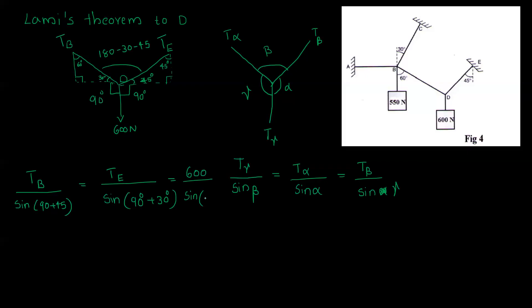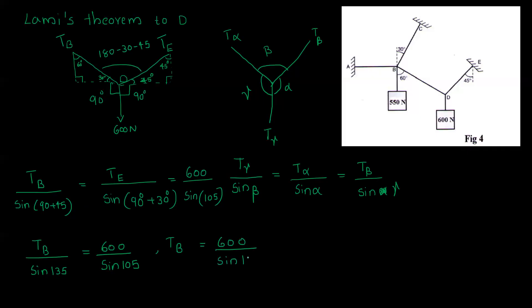We apply Lamy's theorem. TB divided by sin 135 equals 600 divided by sin 105, multiplied by sin 135. That is equal to 439.23 Newton.